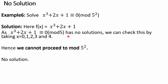For the last example, let's see a case where no solution exists and we cannot use Hensel's Lemma. If we are asked to solve x³ + 2x + 1 ≡ 0 mod 25, we start with x³ + 2x + 1 ≡ 0 mod 5. This has no solution — we can check by taking different residues of mod 5. Since there is no solution at this level, it cannot be lifted to the next stage, so there is no solution mod 25.